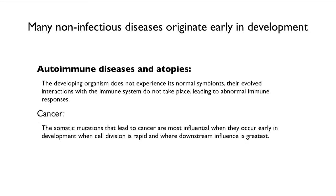Then there's cancer. The somatic mutations that lead to cancer are most influential when they happen very early in life, because then they have the greatest downstream consequence — there's the greatest opportunity for mutations to accumulate in their descendants.